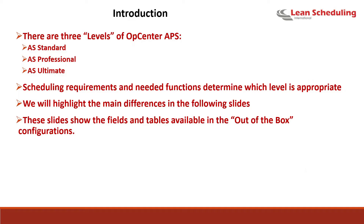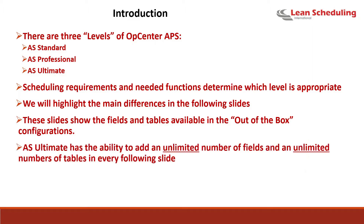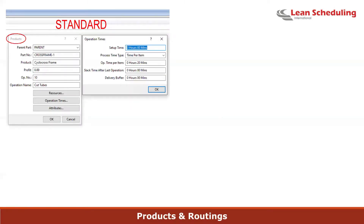The following slides show the fields and tables available in the out-of-the-box configuration. The AS Ultimate, our top tier, has the ability to add unlimited fields and unlimited tables. In the Standard version, products and routings have typical fields: set-up time, process time type (time per item, rate per hour, batch time), and one timing operation called slack time after last operation — meaning after completing an operation, you must wait a specified amount of time before the next one.